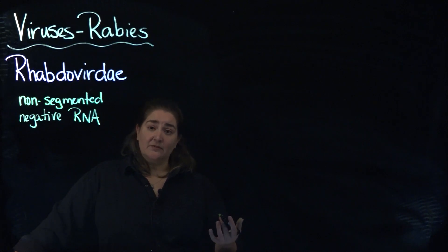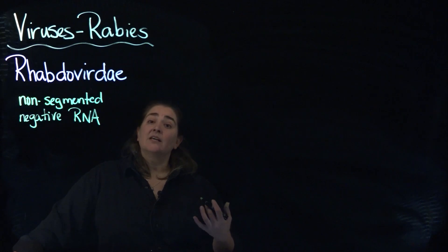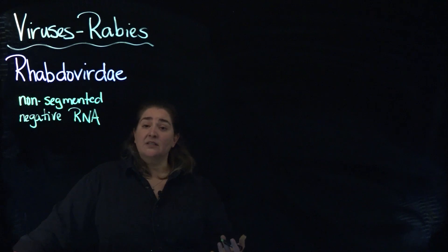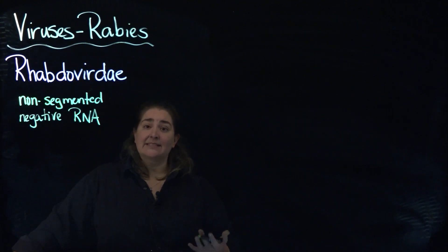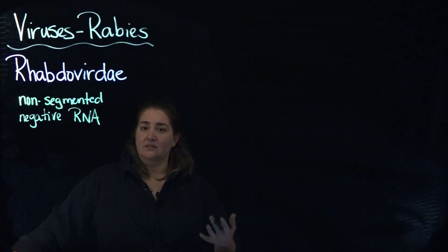Typically, the host for the rabies virus does not exist in the human population at any great level — really, at any level. Individuals who end up with the rabies virus get it because they are bitten by an animal. Animals are the typical host. This is why you take your dogs and cats to the vet to get a rabies vaccination, because with viruses, the best treatment is prevention — it's vaccination.